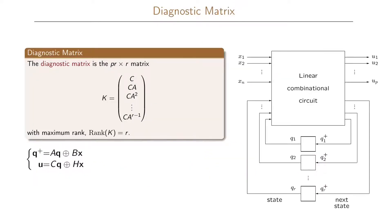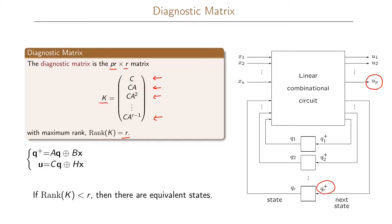We now introduce the diagnostic matrix of our linear sequential circuit. The diagnostic matrix is a PR by R matrix, where P is the number of outputs and R is the number of state variables. It is written as K, which equals C, then C times A, then C times A squared, continuing until C times A to the R minus 1. Since it is a PR by R matrix, the maximum rank is R, giving at most R linearly independent equations relating the starting state to the output sequence.